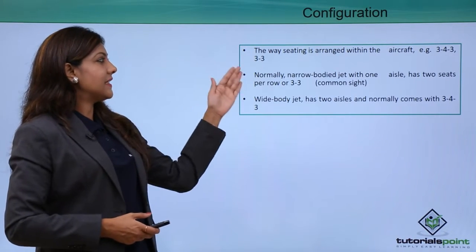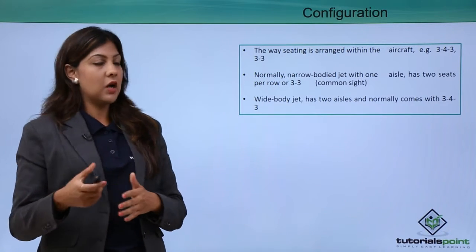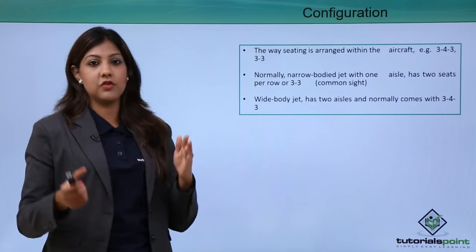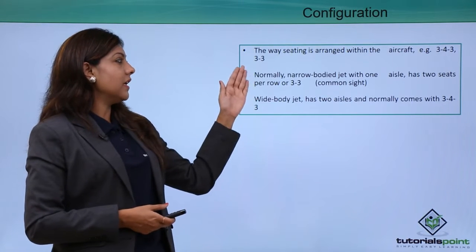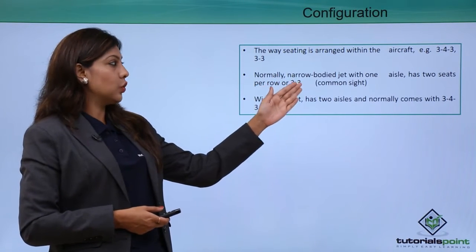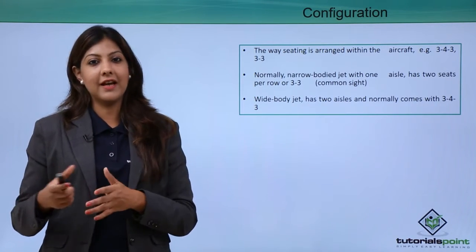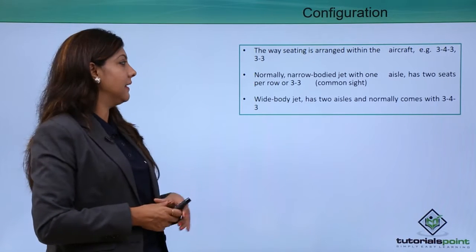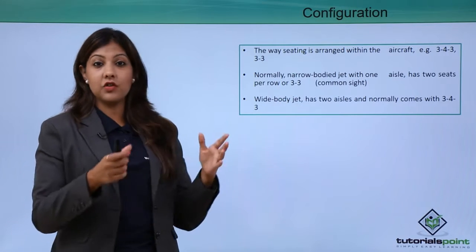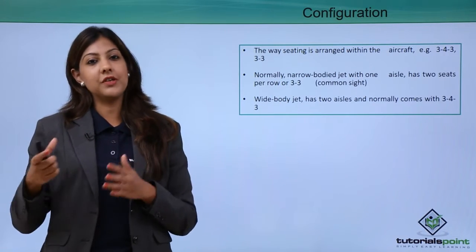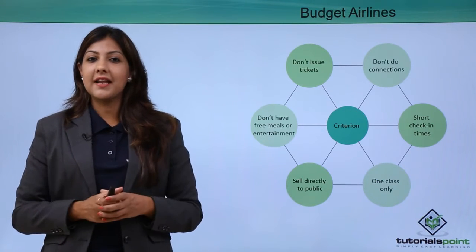The seating configuration refers to how seats are arranged within the aircraft — for example, three seats, four seats, and three seats, or three by three. A narrow body jet with one aisle typically has three seats on each side. A wide body jet with two aisles commonly uses a 3-4-3 configuration: three seats on the left, four in the middle, and three on the right.